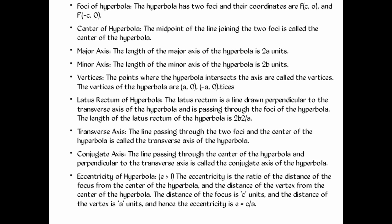The last part is the eccentricity of the hyperbola, where e is greater than 1. The eccentricity is the ratio of the distance of the focus from the center of the hyperbola to the distance of the vertex from the center. The distance to the focus is c units and the distance to the vertex is a units.